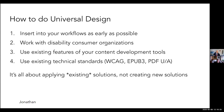Use the existing features of your content development tools. People often think they need to learn how to code accessibility — no one's asking you to do that. Use the features that exist and use existing technical standards. There are a series of technical standards used around the world. For instance, the Web Content Accessibility Guidelines, WCAG, is the most well-documented set of accessibility guidelines anywhere, with examples, explanations, and how-to videos — that's for web content.